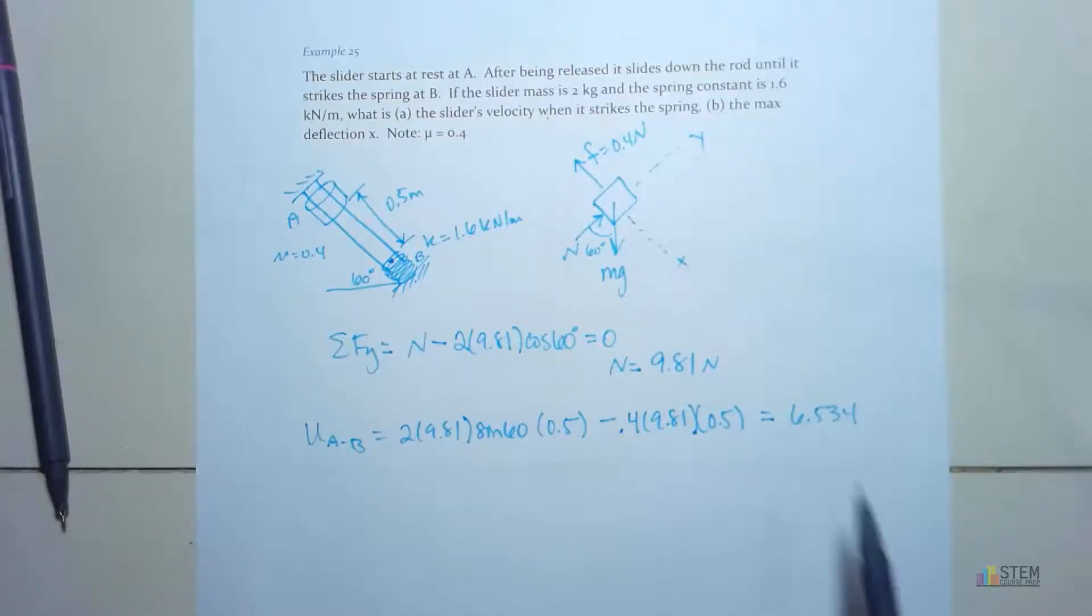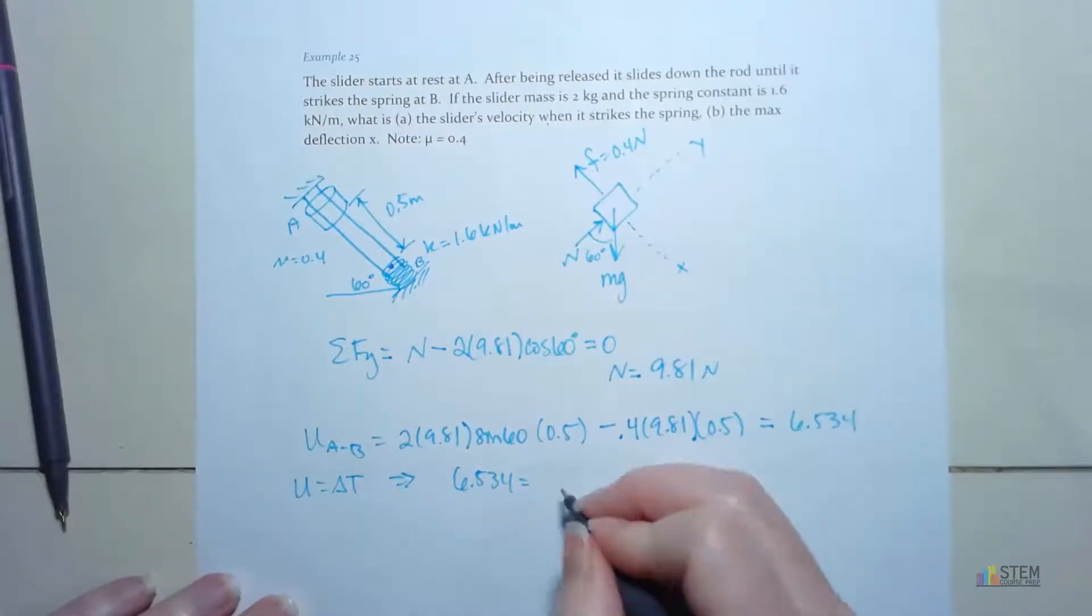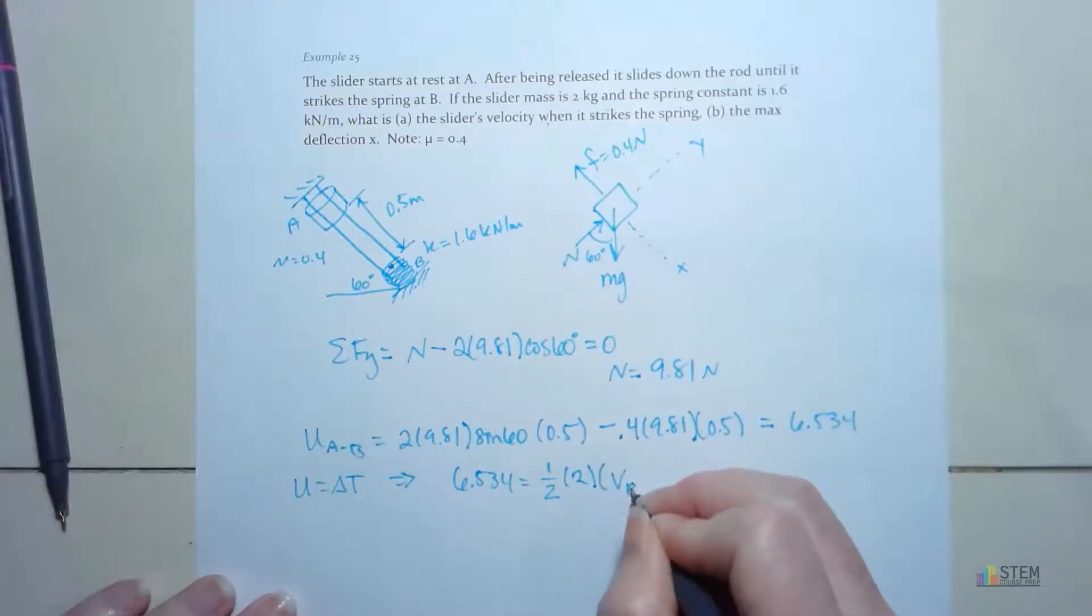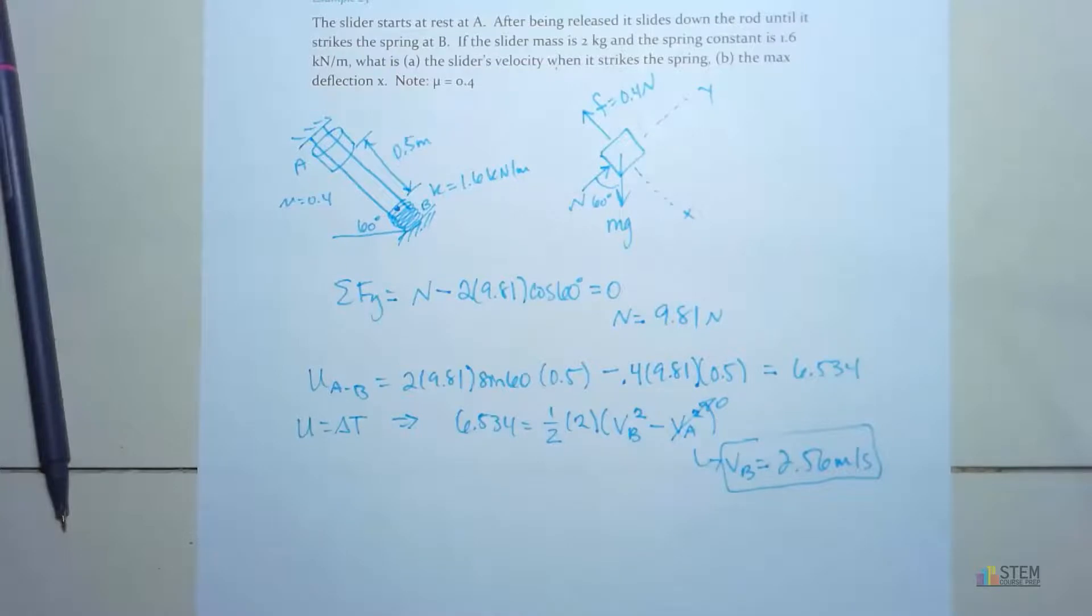Now, I still need to find velocity. I don't have velocity anywhere yet. Well, what about this equation? Remember, U is equal to delta T. T had velocity in it, right? So let's use that. So we're going to say 6.534 is equal to 1 half, and then we're going to have the mass, which is 2, times the final velocity, which will be VB, square that, minus your initial velocity squared. This one goes to zero. So now you're able to find VB, which is 2.56 meters per second. So that's how you go about doing that one.